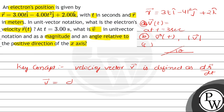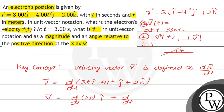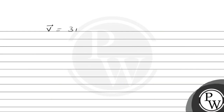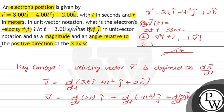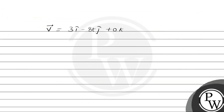So the velocity vector equals d/dt of the position vector, which we are given as 3t î minus 4t² ĵ plus 2k̂. Differentiating them individually: d/dt of 3t î plus d/dt of (-4t² ĵ) plus d/dt of 2k̂.